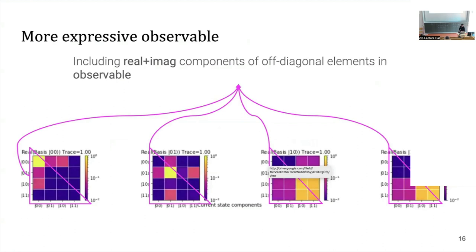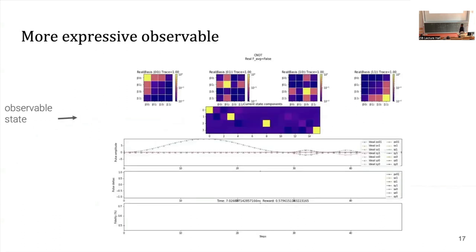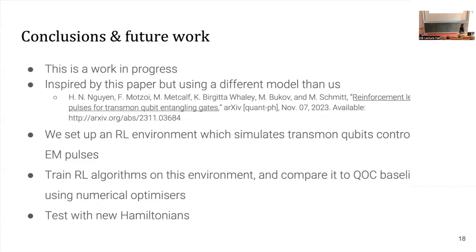What we're thinking next is a more expressive observable, because just including the diagonals of the density matrices is not enough information to describe the simulation system. We're working on including the real and imaginary components of the lower triangular matrices of the density matrices, and also working directly with state vectors. This is work in progress, mainly inspired by cited prior work. We set up an environment to simulate and optimize pulse creation for implementing gates, and want to test with other models and new algorithms.